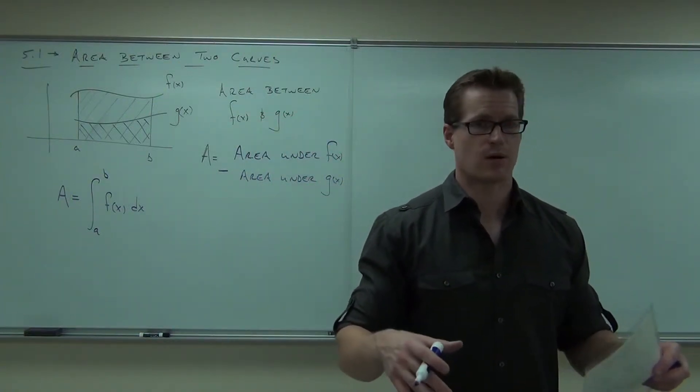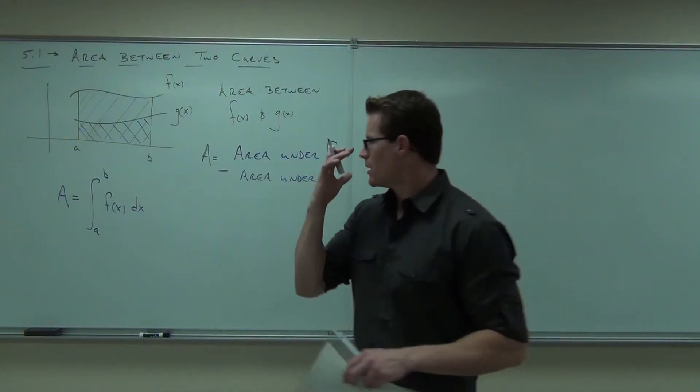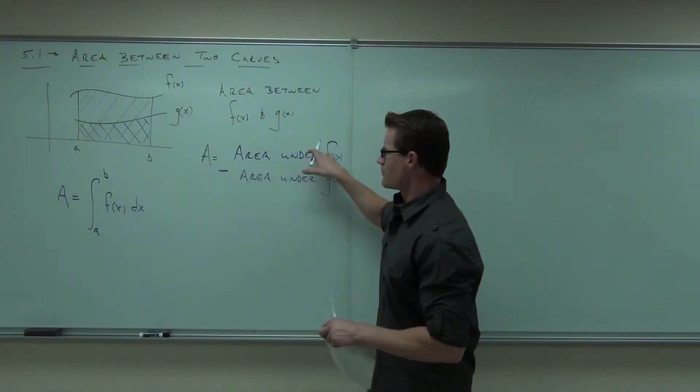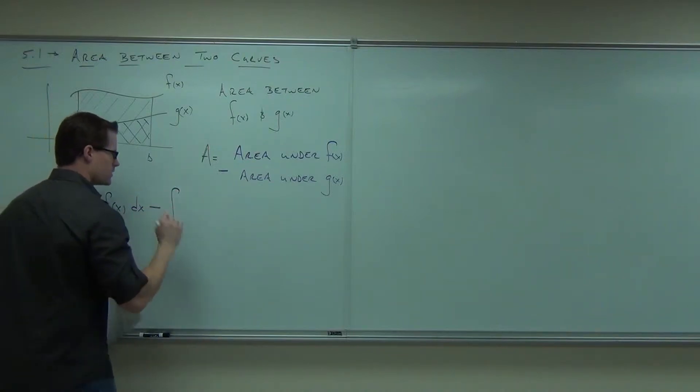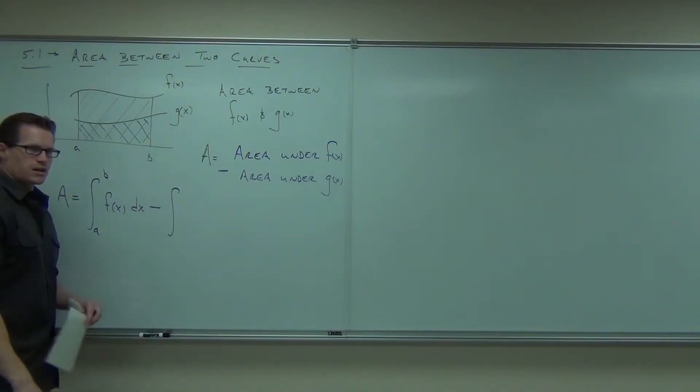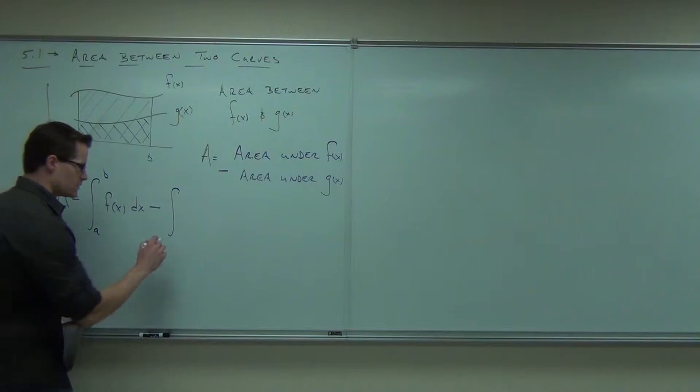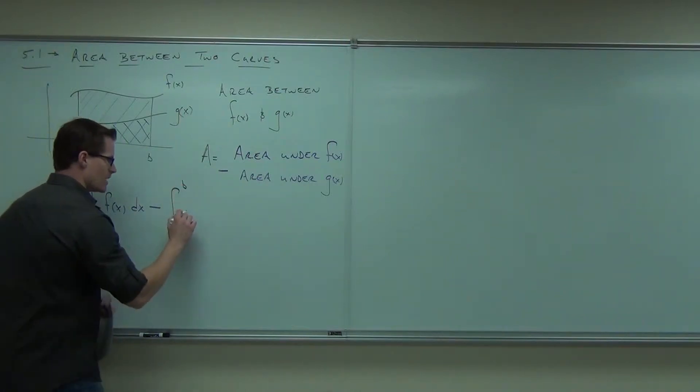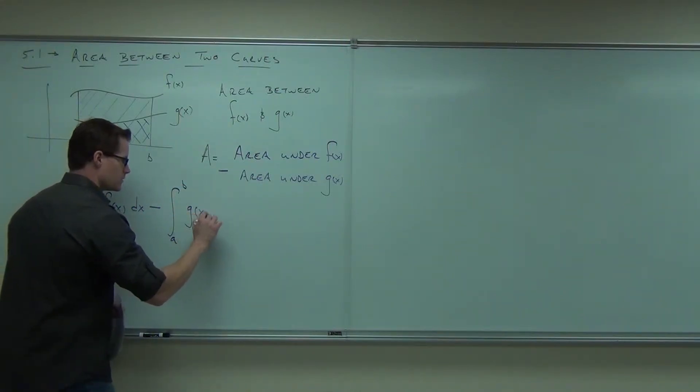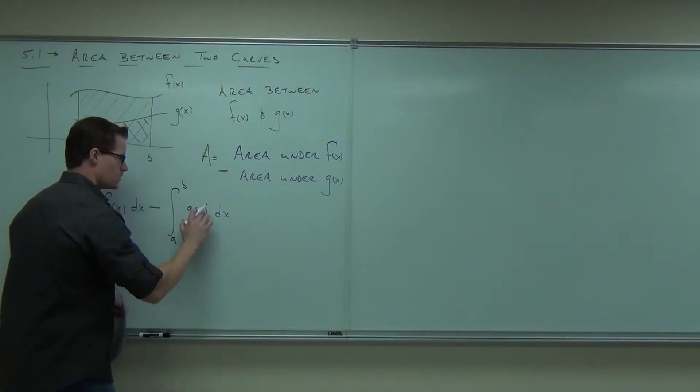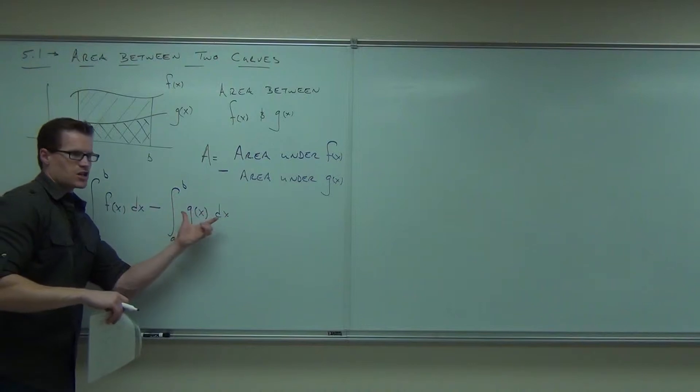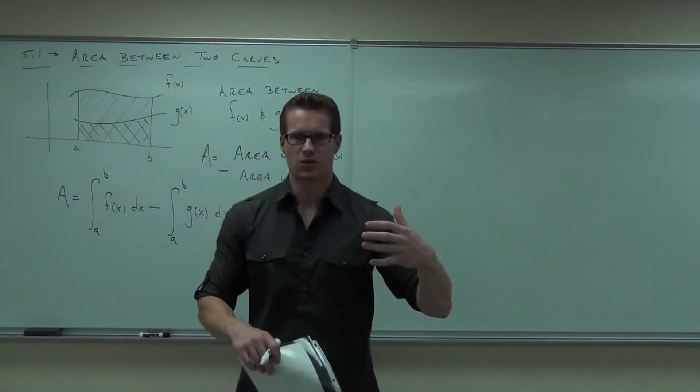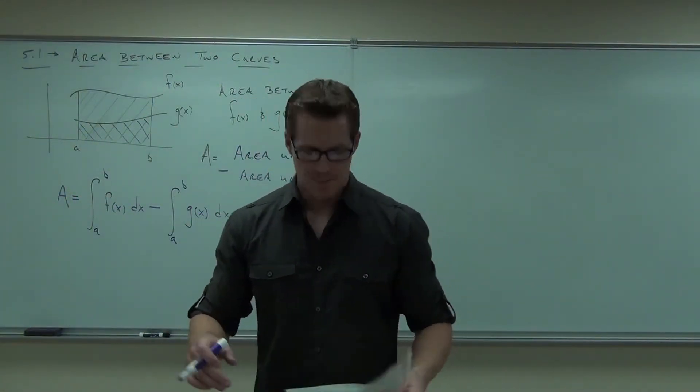At least that's what I told you it was, and that's how we've been working with this thing this whole time. So we have the area under f of x, great, minus the area under g of x. What's the area under g of x? A to b and g of x. Wait, you're telling me it's the same a to b? Oh, that's cool. So would you say that that's the area under f of x minus the area under g of x, and that's going to give us the area between those two curves? That's exactly what it's going to give you.